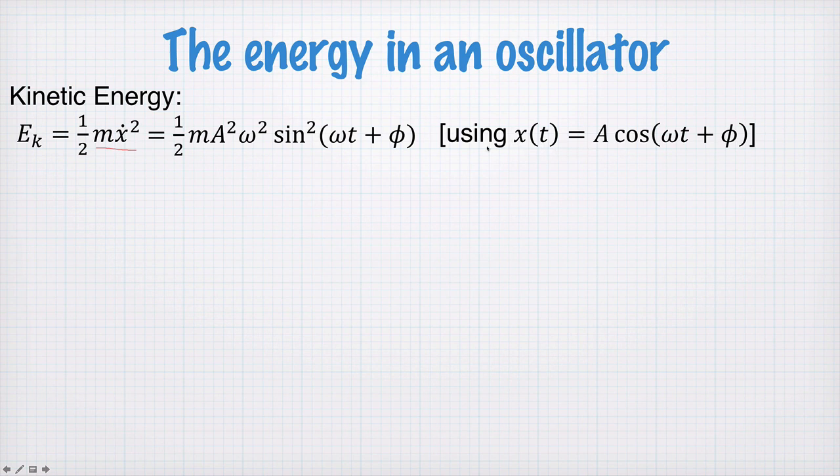Then we can write half mv squared as half m A squared ω squared sin²(ωt + φ). So this here, this is the kinetic energy of our mass.